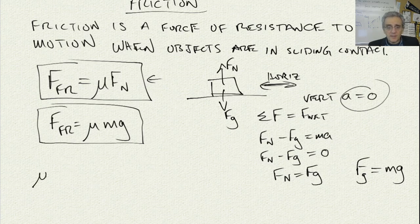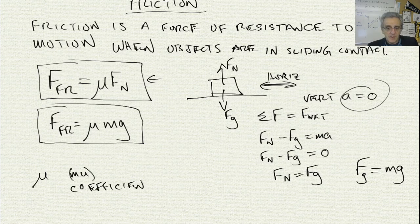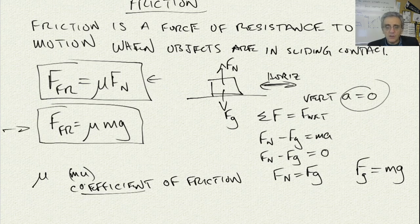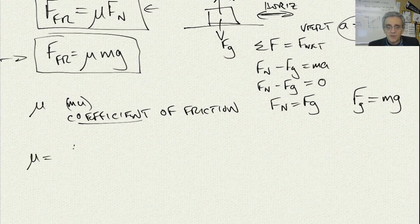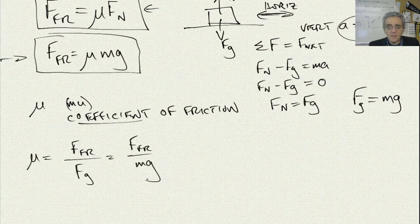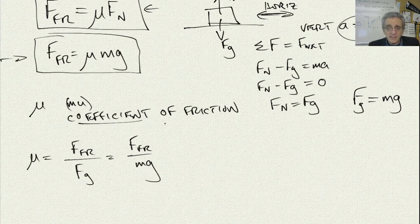So what is mu? Mu is the coefficient of friction. If we take the friction equation and solve for mu, we get: mu equals force of friction divided by force of gravity, or mg. The coefficient is unitless — no units — and it represents the ratio of friction force to weight.